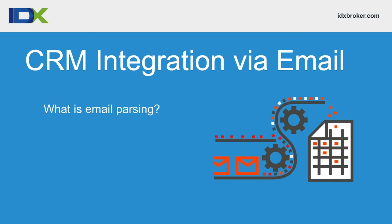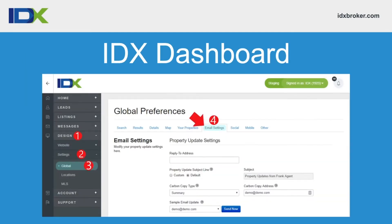The first method is CRM integration via email, using a process called email parsing. Email parsing takes an email, runs through the code, and extracts data so it can be inserted into your CRM. Every time a lead signs up in IDX Broker, an email is sent out. An email parser takes that lead email and strips out the phone number, first name, and email address so that data can be put into your CRM.